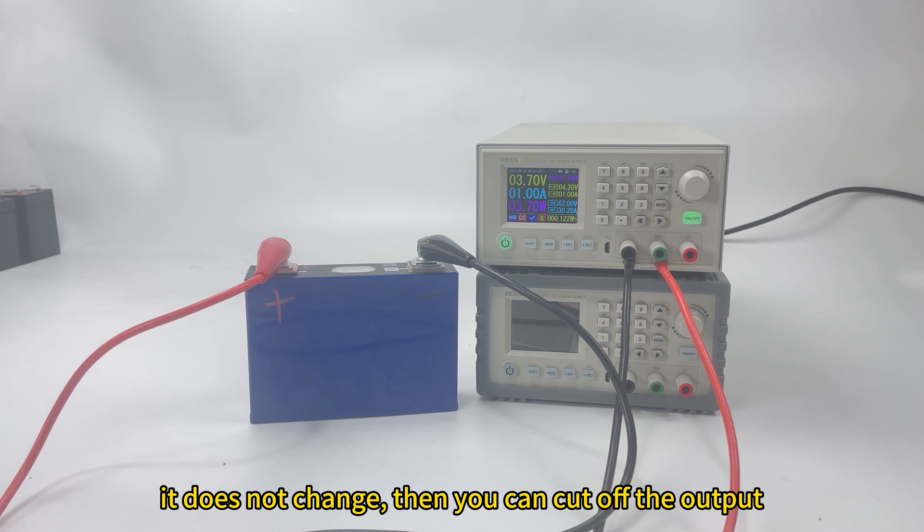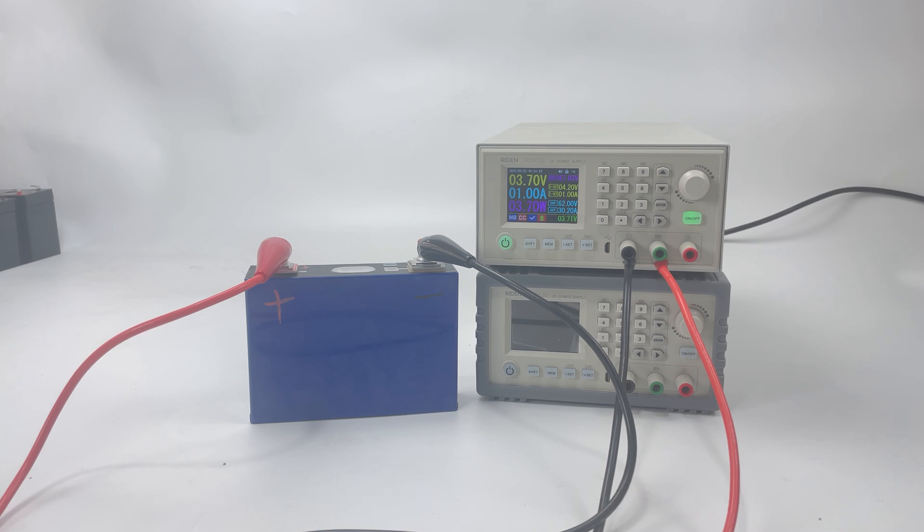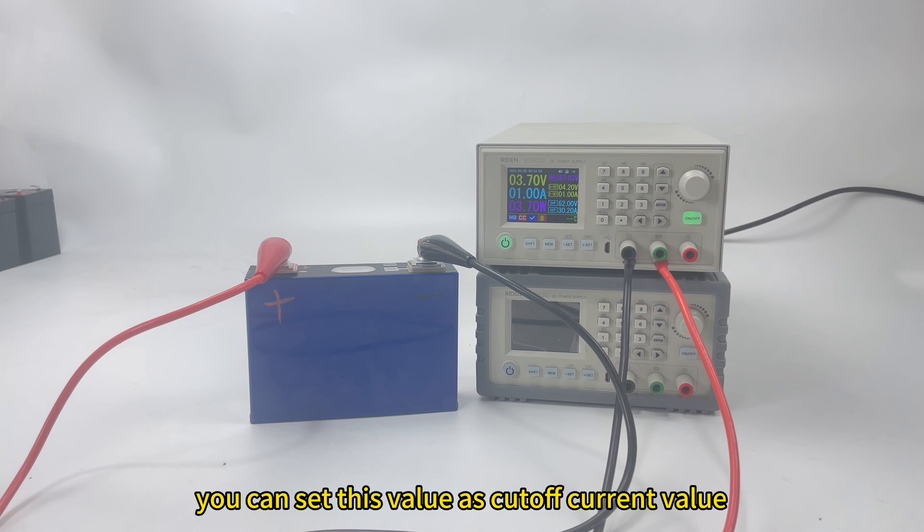It does not change. It can be considered that the battery charging can be cutoff. Then you just set this value as cutoff current. When the current decreases to this value, the output will be turned off.